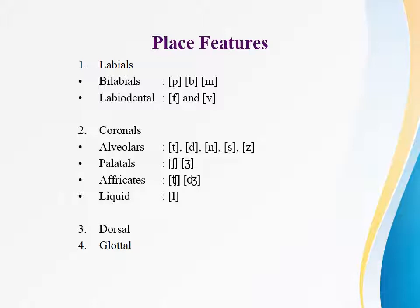The first is place features. Place feature is the feature that specifies the place of articulation. The first part of place features is labials. The class of labial consonants includes bilabial sounds like /p/, /b/, /m/, as well as labiodentals like /f/ and /v/. Labial sounds are those articulated with the involvement of the lips.